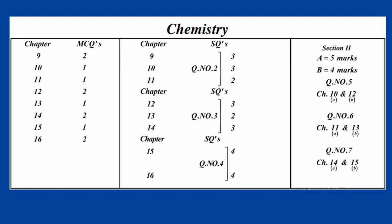Now let's look at the long questions. The first long question is question number 5, which has two parts: Part A (5 marks) and Part B (4 marks). Part A of question number 5 comes from Chapter 10, and Part B comes from Chapter 12.